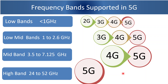In summary, 2G operates in the lower side of the band. 3G operates on the lower side of the band as well as low mid bands. 4G operates on the lower side of the band and mid band. 5G operates in all the bands — low band, mid band, and also in millimeter wave.